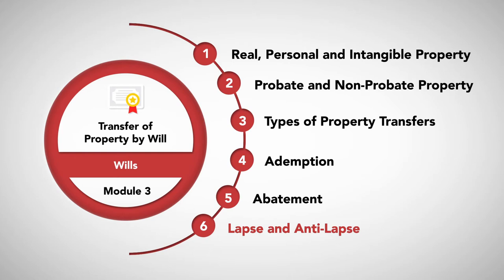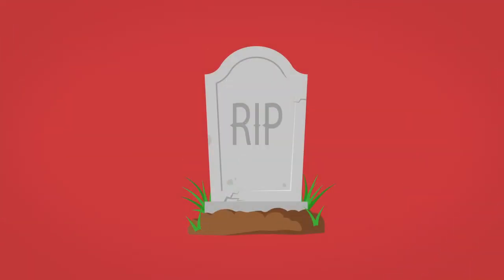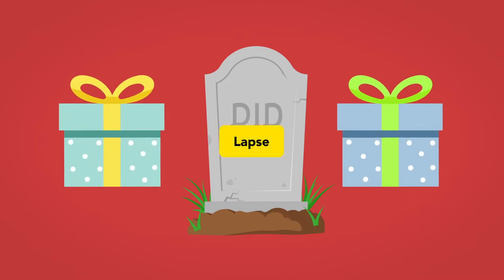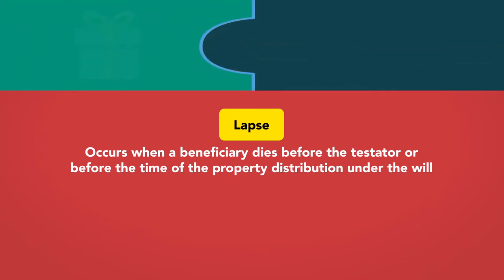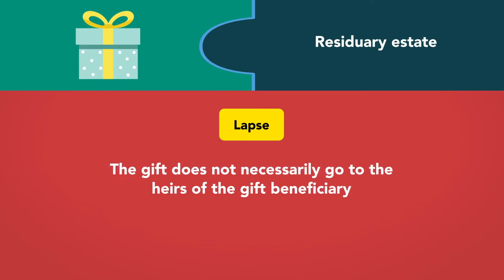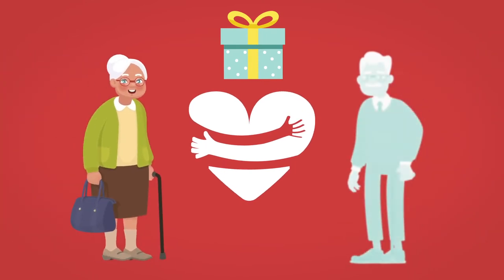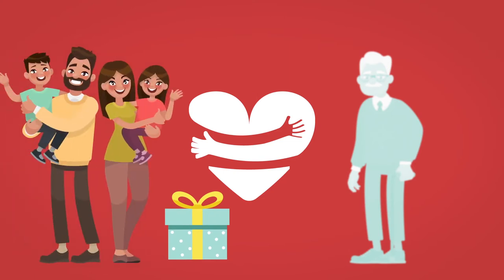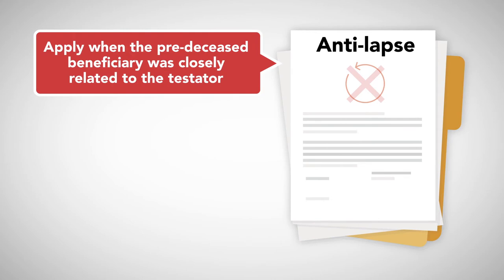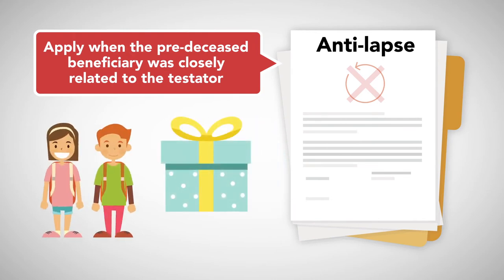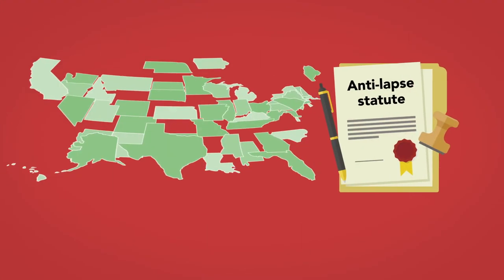Lapse and anti-lapse. The final concept affecting gifts of property at death is the concept of lapse. Lapse occurs when a beneficiary dies before the testator or before the time of the property distribution under the will. The general rule in such a case is that the gift lapses and becomes part of the residuary estate. The gift does not necessarily go to the heirs of the gift beneficiary. However, where the recipient is closely related to the testator, there is a presumption that the testator would have wanted the property distributed to the beneficiary's surviving heirs, since they are also heirs of the testator. Therefore, states have enacted anti-lapse rules, which apply when the pre-deceased beneficiary was closely related to the testator. In such cases, the lapsed gifts go to the beneficiary's heirs instead of back into the residuary estate.